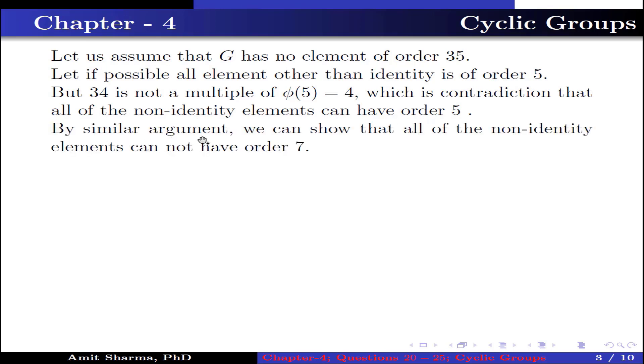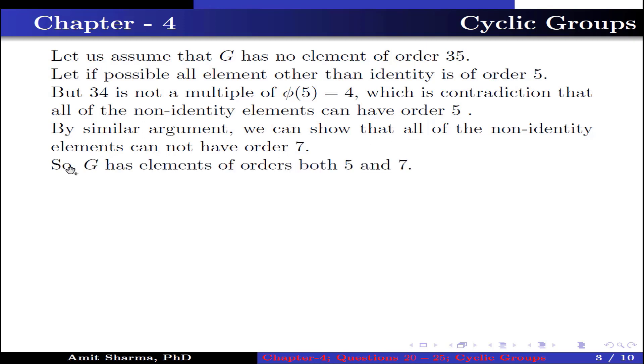Now by a similar argument, we can show that all the non-identity elements cannot have order 7. So G has an element of order 5 and an element of order 7.